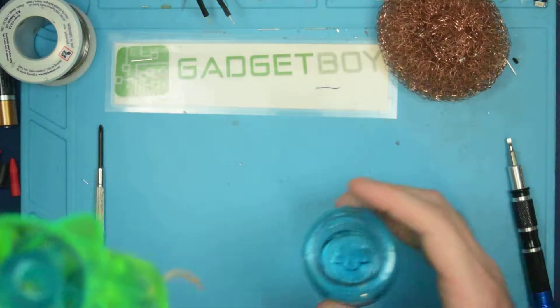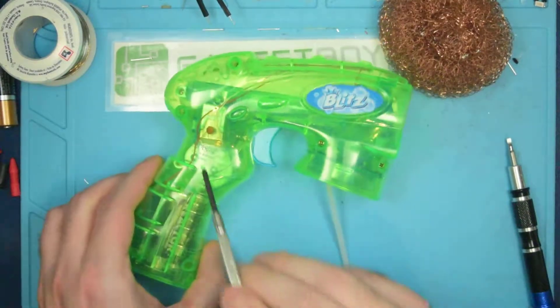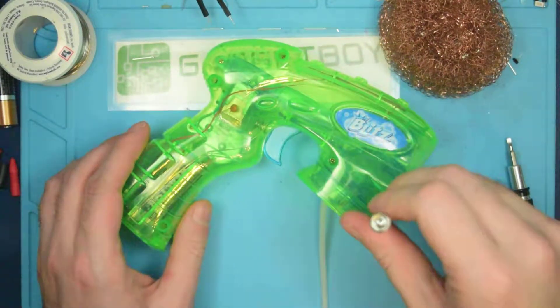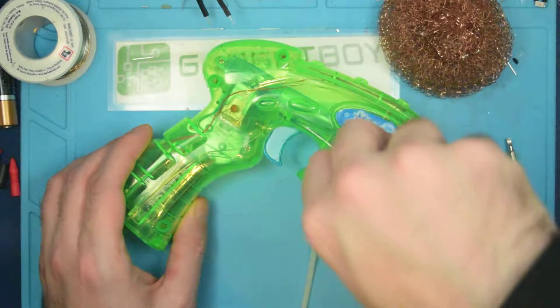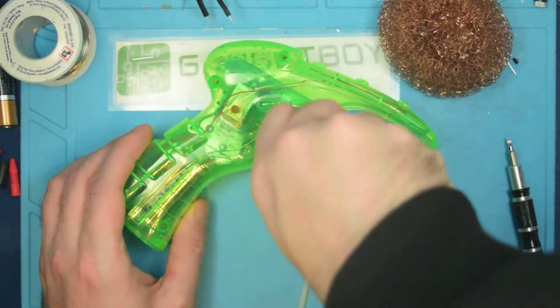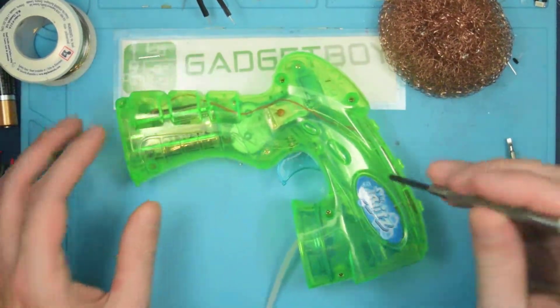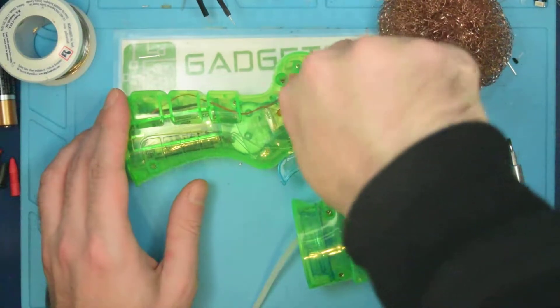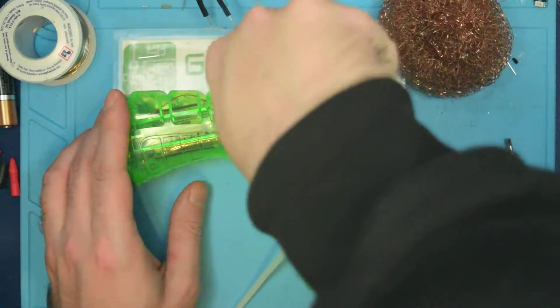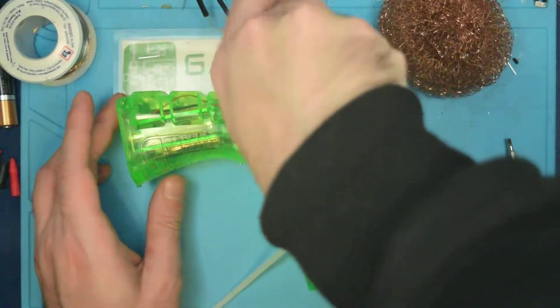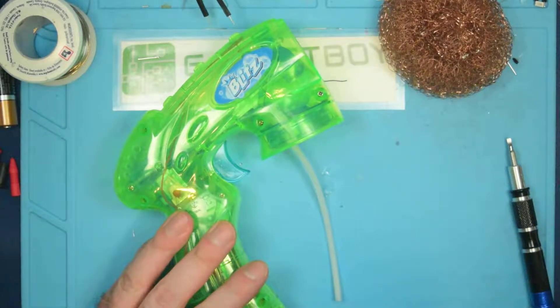I'm going to be taking apart this bubble gun shooter thing because I want the peristaltic pump out of it. What's a peristaltic pump you may ask? It is a pump that instead of using compression to move fluid, it basically uses vacuum. It's kind of hard to describe the way it works verbally, so I'm just going to extract it from this thing. I should probably remove the batteries too while I'm at it. And then I'll show you how it works.